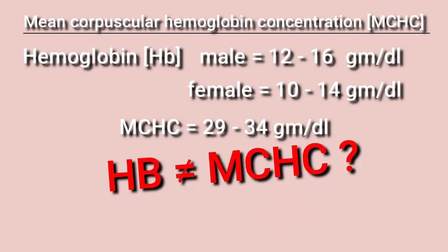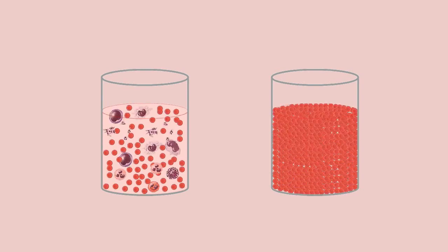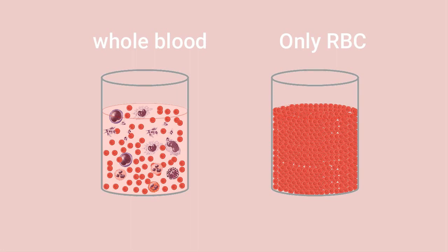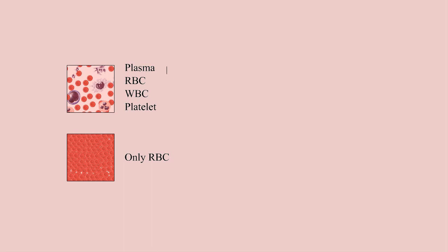To explain the difference between Hb and MCHC, imagine two containers side by side. One contains whole blood — plasma, RBC, WBC, platelets, and everything — while the other contains only RBCs. Taking one deciliter from each and measuring hemoglobin concentration gives different results: the first, containing everything, has a lower concentration, while the second has much higher hemoglobin concentration because it contains only RBCs. The first represents hemoglobin concentration and the second represents MCHC.